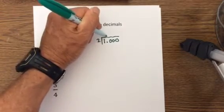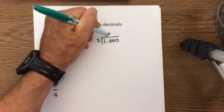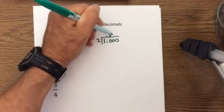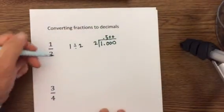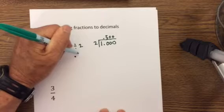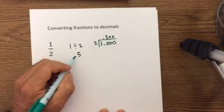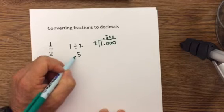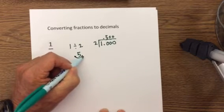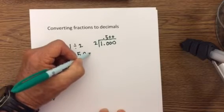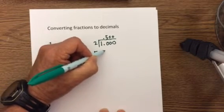Be very careful to put your decimal point there. 2 will go into 10 five times, so 1 half is equal to 0.5. Now, if you have the decimal 0.5, you can convert it into a percent just by moving the decimal two places to the right — so that would be equal to 50 percent.